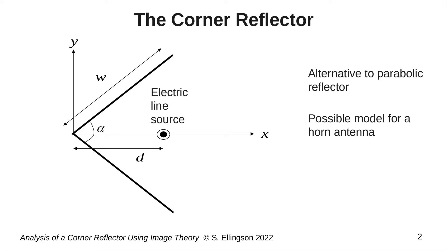Here's a sketch of a corner reflector. The reflector consists of plates which are joined at an angle alpha, as is indicated in this diagram. The feed consists of an electric line source which is oriented perpendicular to the screen. The distance between the vertex of the reflector and the feed is d, and the width of each plate is w.